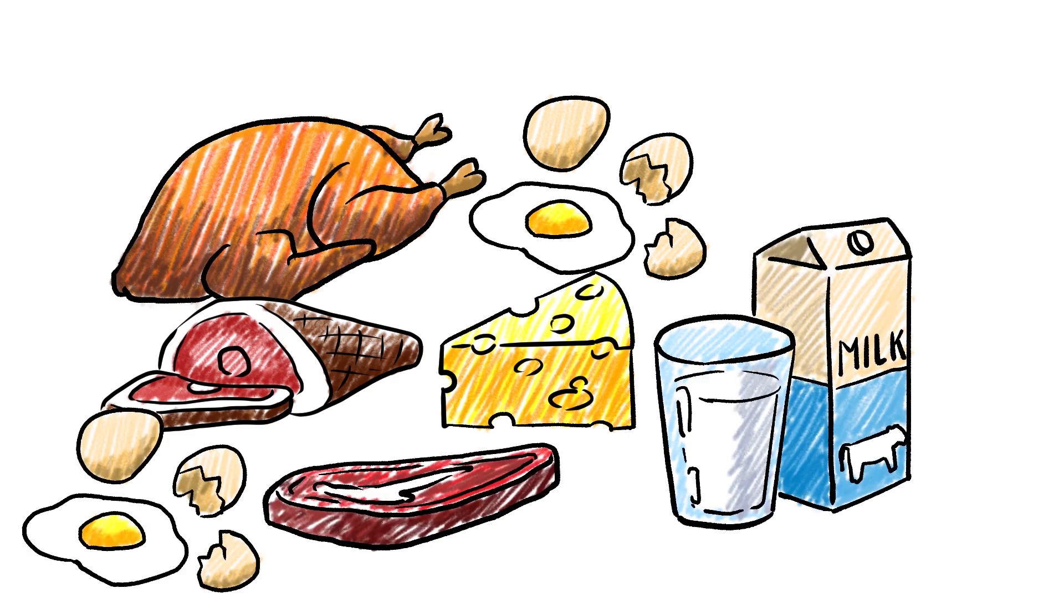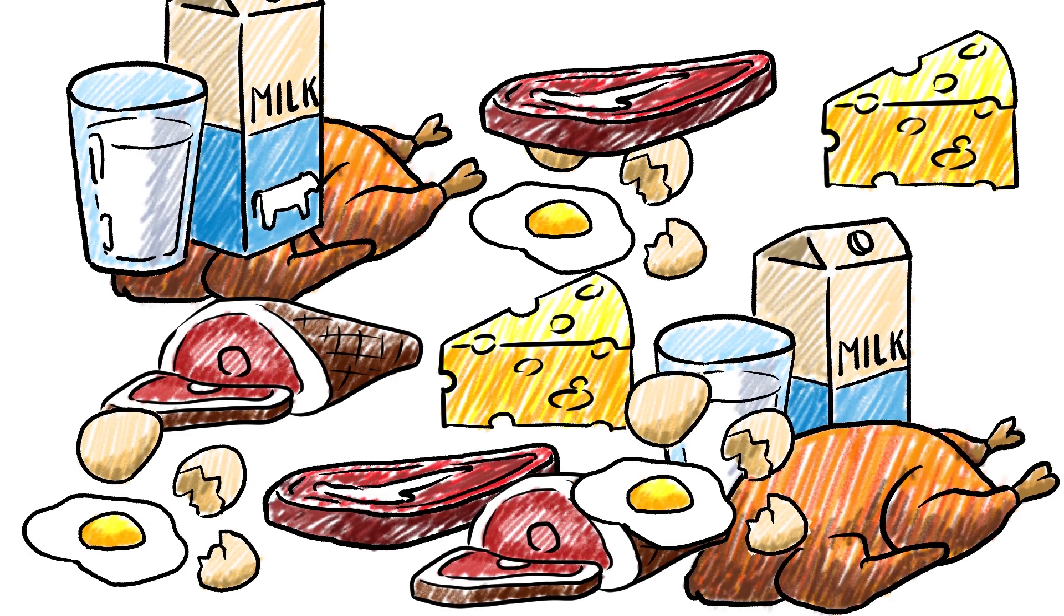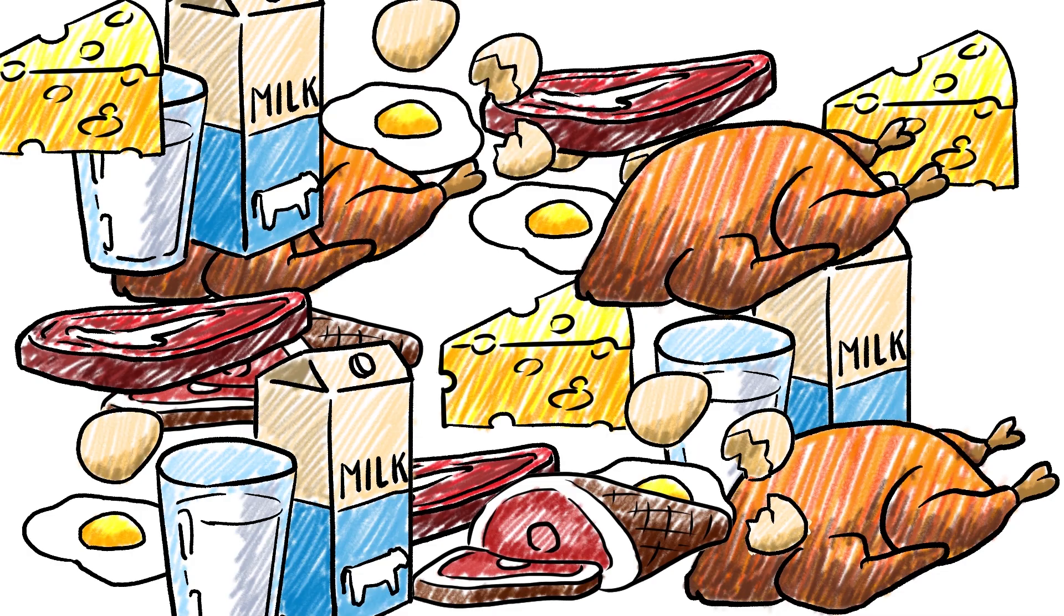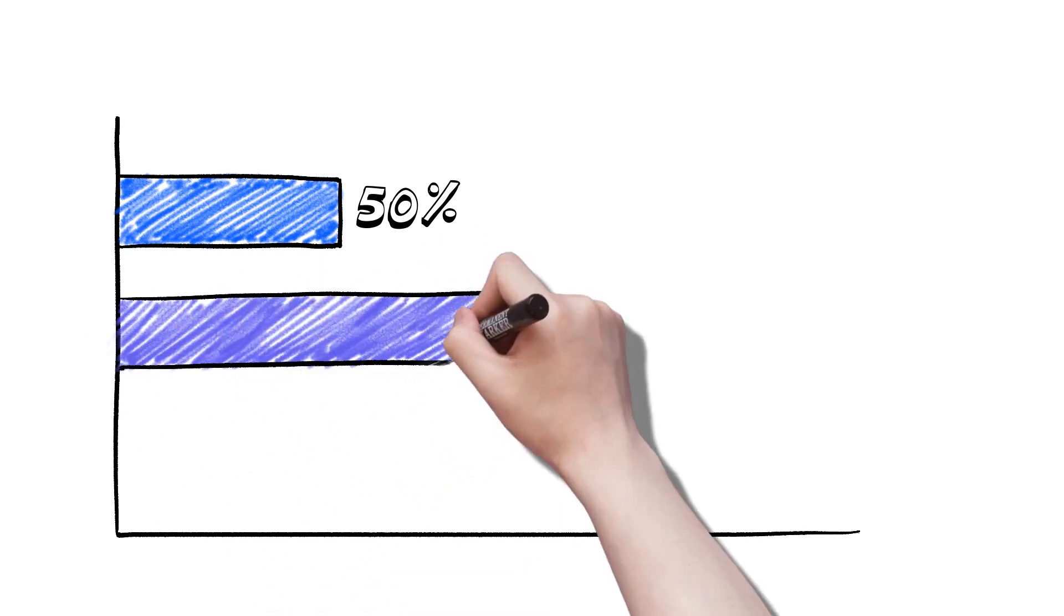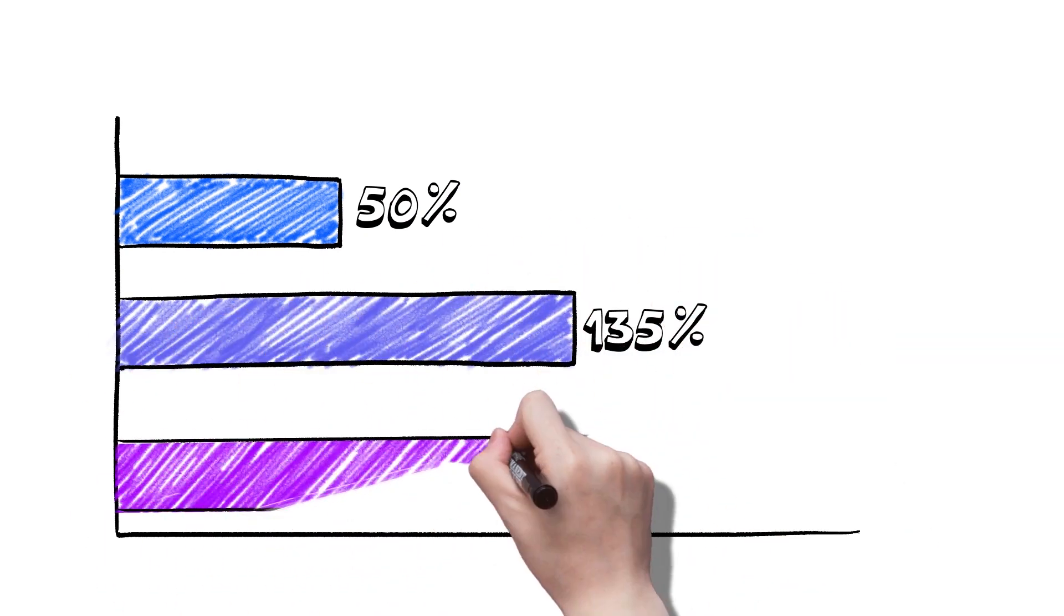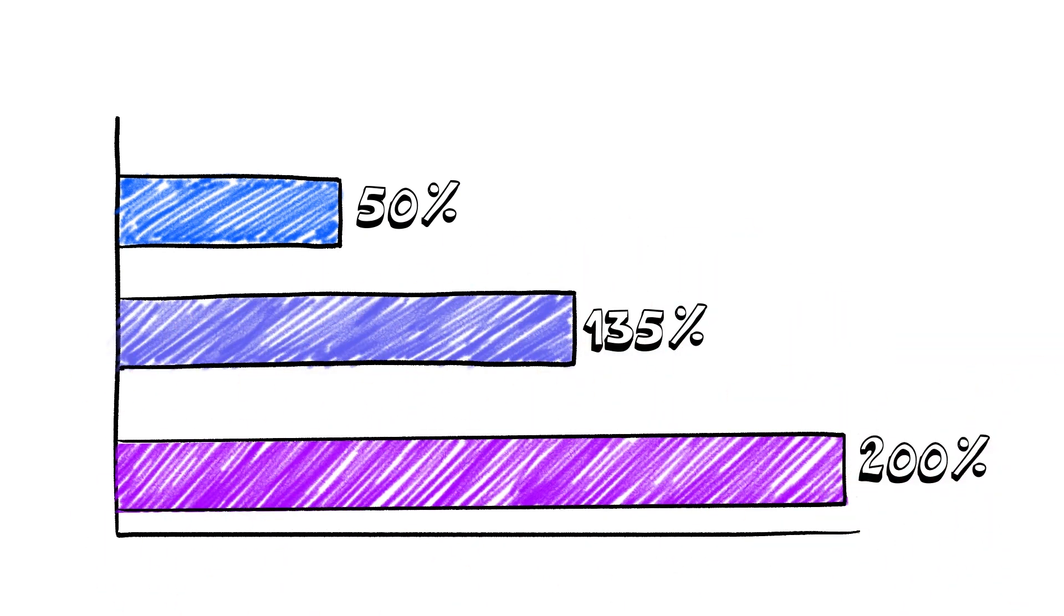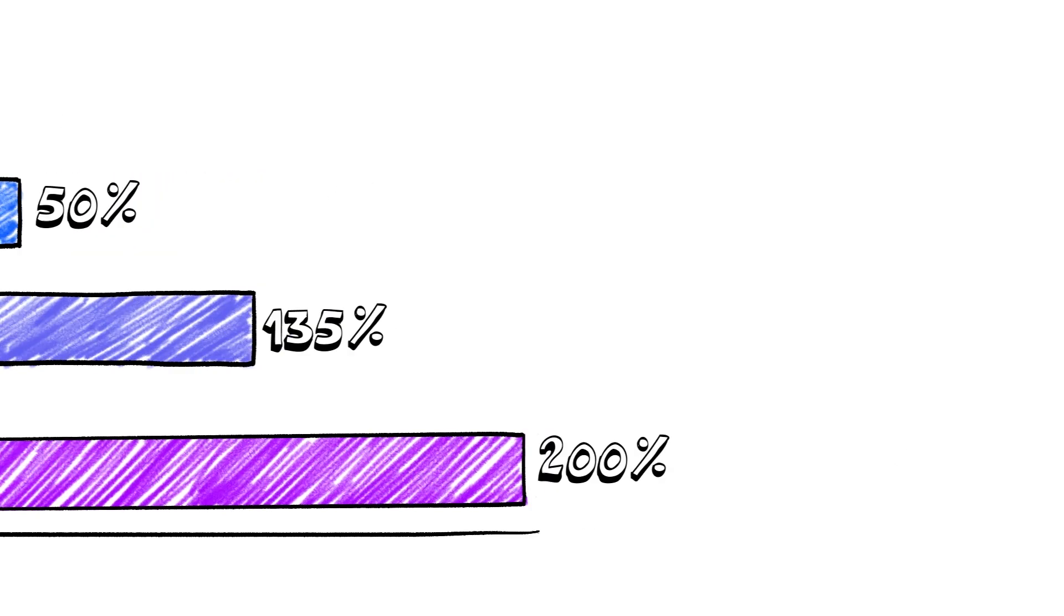At first glance, this may seem like a lot of protein. However, the truth is, most people are likely getting too much protein. Research has found that the average person today consumes between 90 to 135 grams of protein on a daily basis. In some cases, it can even be as high as 200 grams.